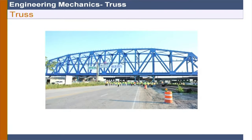You see trusses almost everywhere - in roads, in bridges, in foot-over bridges, trusses have been used. Why do we use a truss? To summarize, designing a truss is very simple, and also notice that all the truss members are very slender in nature. In that way we can make it more economical.